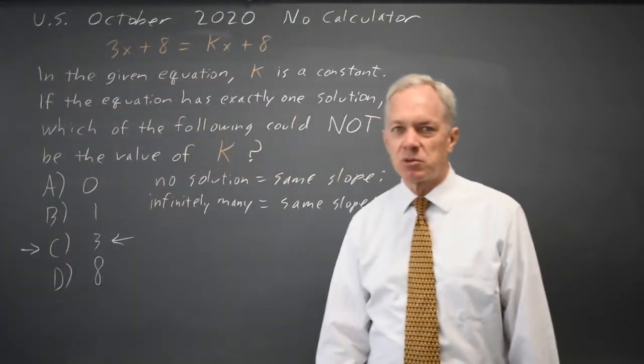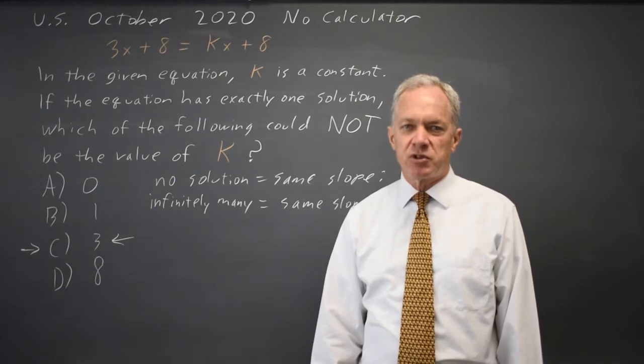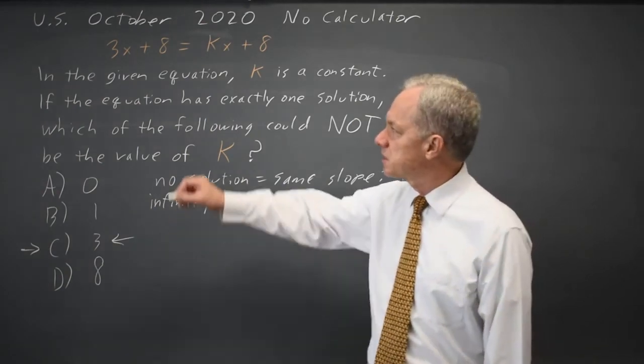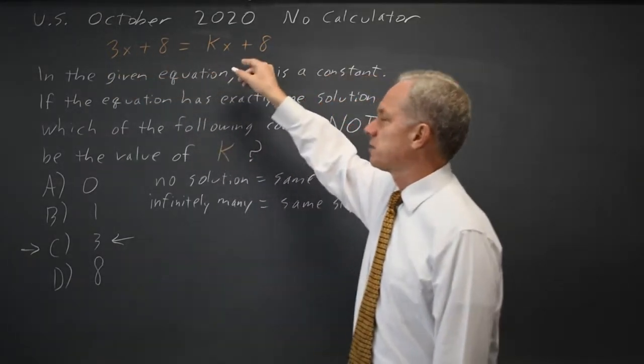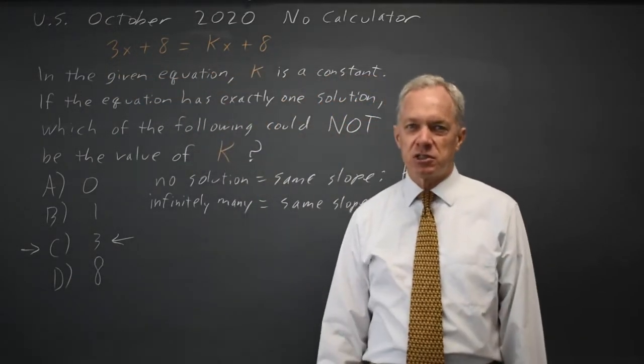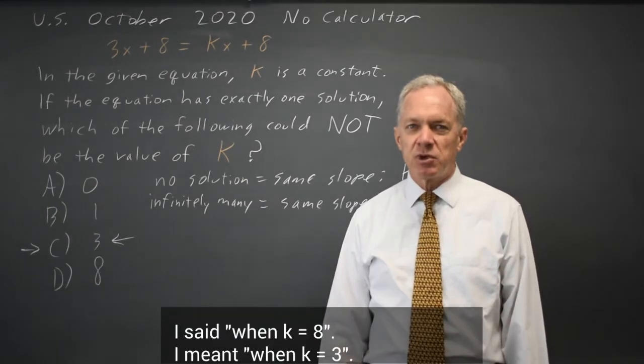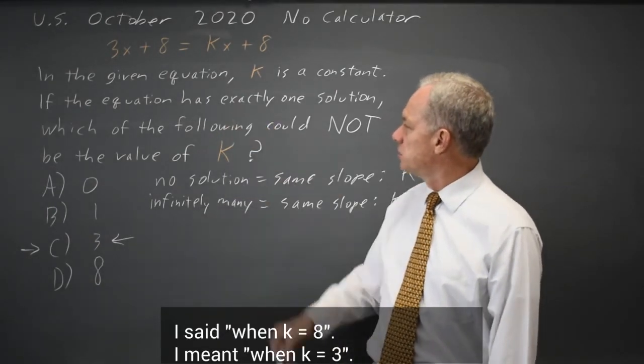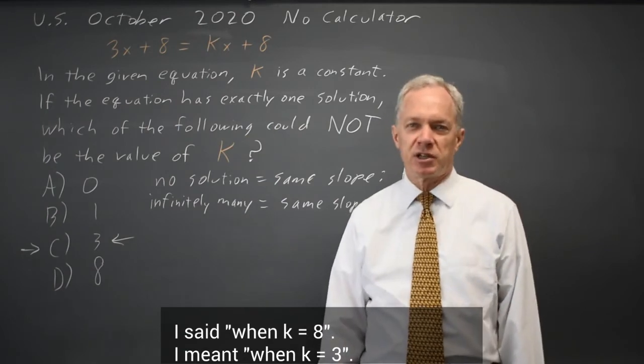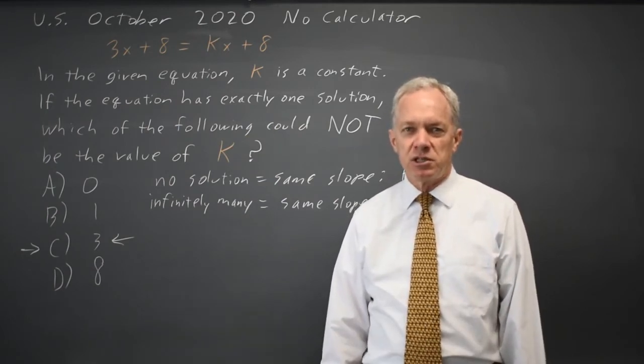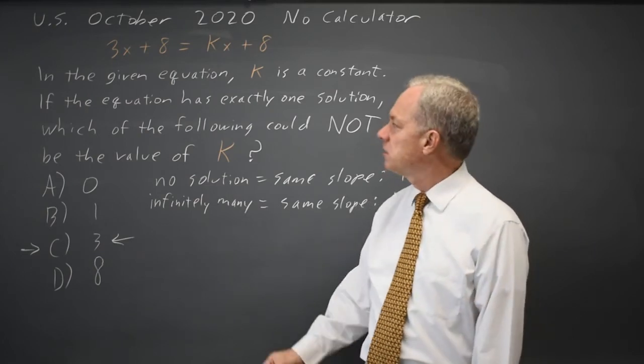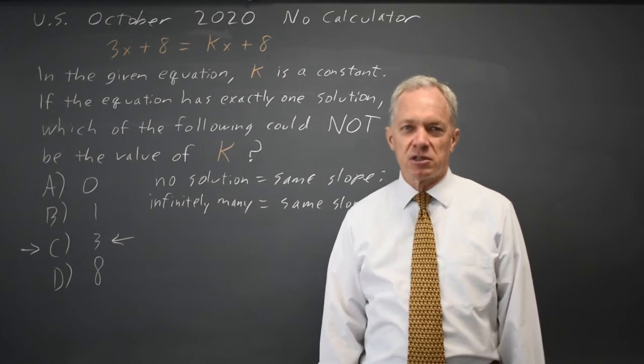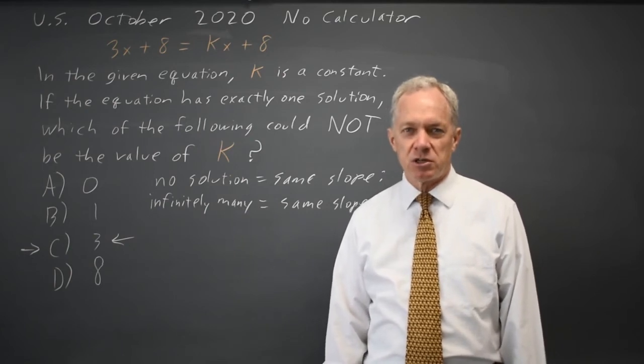College Board typically words this differently, as for which value of k are there infinitely many solutions. In this case, because 3x plus 8 equals kx plus 8 has infinitely many solutions for k equals 3, but it's equivalent to say, if you have exactly one solution, which of the following could not be the value of k. So no solution, infinitely many solutions does not have exactly one solution. You're looking for the same slope on both sides.